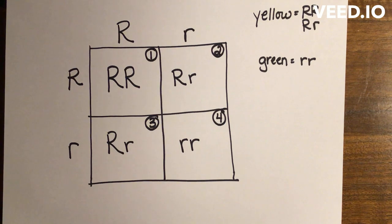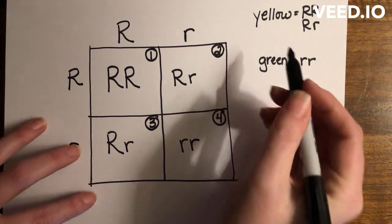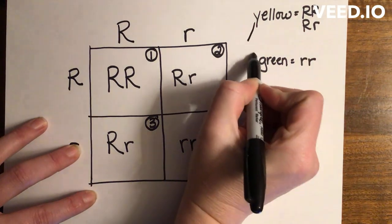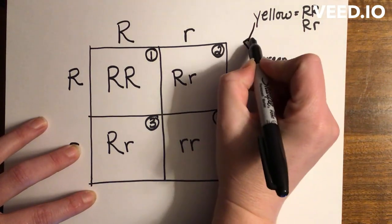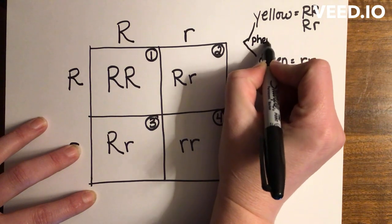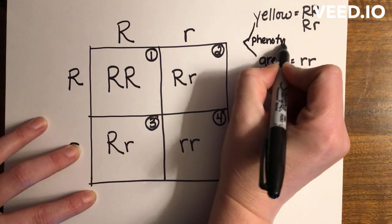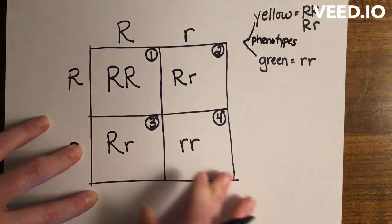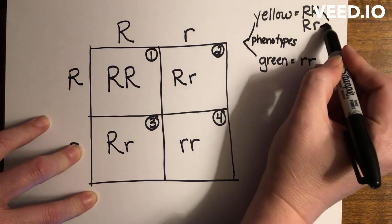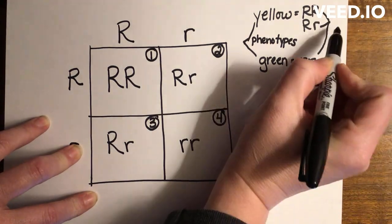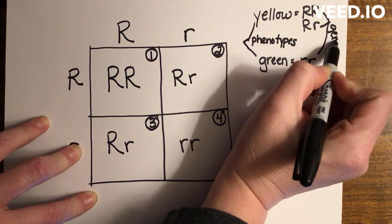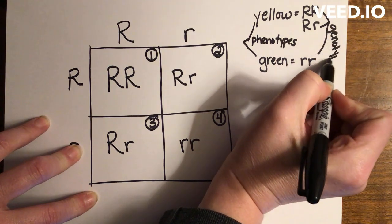So let's write out our probability. Sometimes we do this in percentage, sometimes we do this in ratio. You have to pay attention to what it's asking for. As a reminder, yellow and green—these are phenotypes. This is what the actual trait looks like. These letters—these are genotypes. These are what the genes look like.